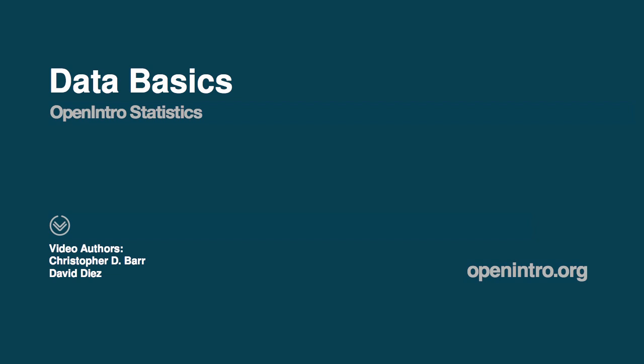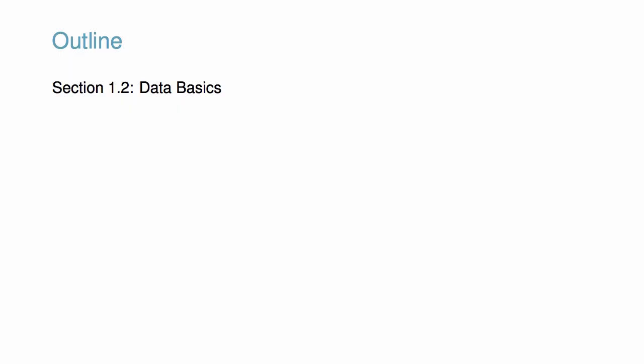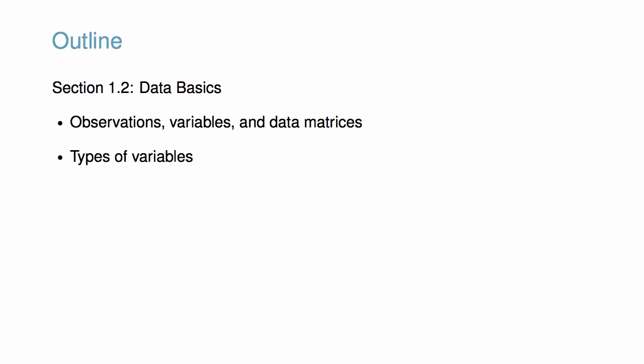This video accompanies the discussion of Data Basics in Open Interest Statistics. Presenting and describing data is a first step in most analyses, and this video will provide some of the fundamental tools and terminology for getting started. We will become familiar with observations, variables, and data matrices. We will learn about different types of variables, including numerical and categorical variables, and we will have our first introduction to scatter plots and relationships between variables.